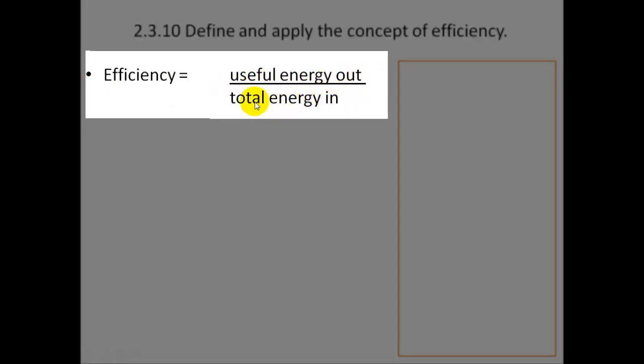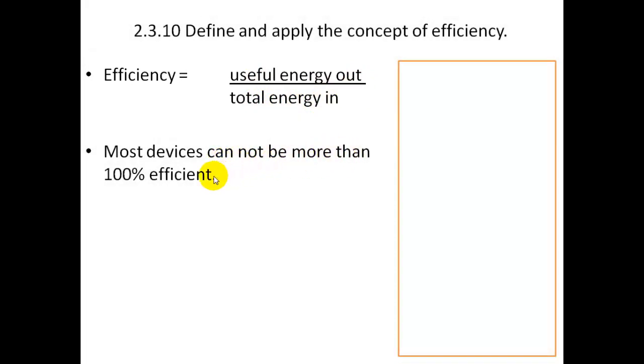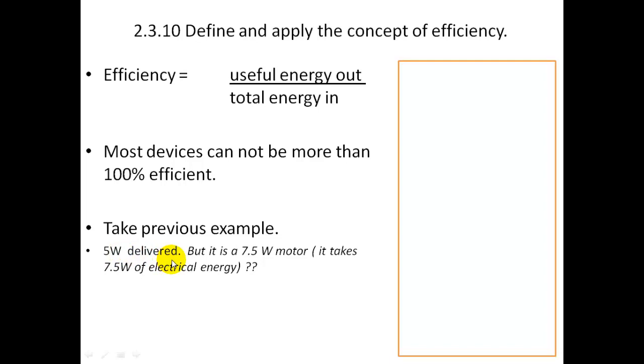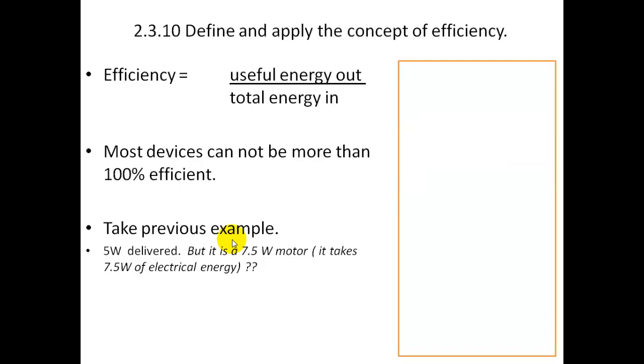So we get onto efficiency now. This is useful energy out divided by the total energy in. Most devices cannot be more than 100% efficient, and nearly all of them are less than 100%. So take the previous example. Remember that we had 5 watts delivered to the weight that's been lifted up. But 7.5 watts is the power rating of the motor. It takes 7.5 watts of electrical energy. So what is the useful energy in? It's the energy that it takes, which is 7.5. So what is the useful energy out? It's the work that we managed to do, which is 5 watts. What is the total energy in? It's 7.5. So it's going to be 5 divided by 7.5, which is two thirds.